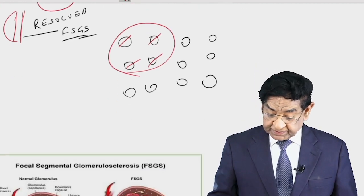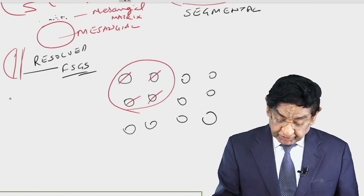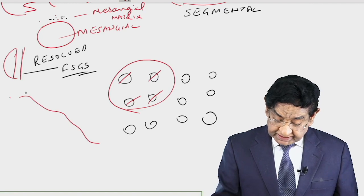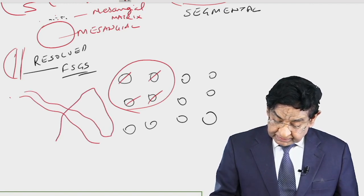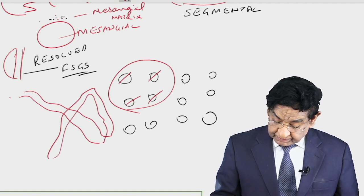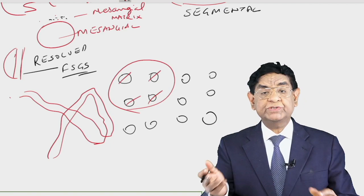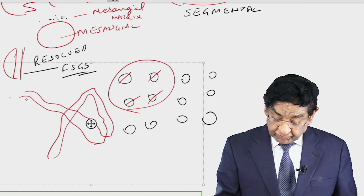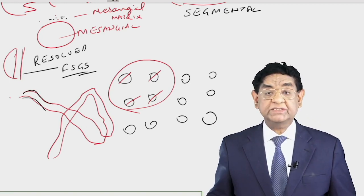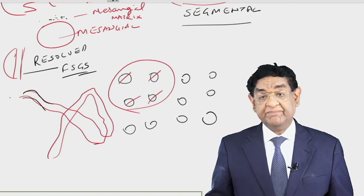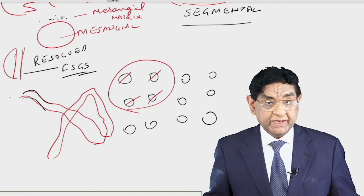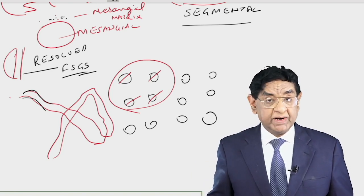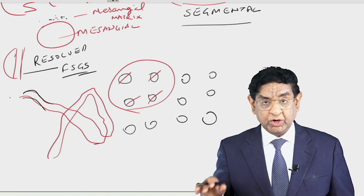We use the term 'segmental' because within one glomerulus, only a part — a segment — is involved while the other part remains normal. So to recap: only a few glomeruli are involved (focal), and even within one glomerulus only part is affected (segmental), giving us focal and segmental glomerulosclerosis.